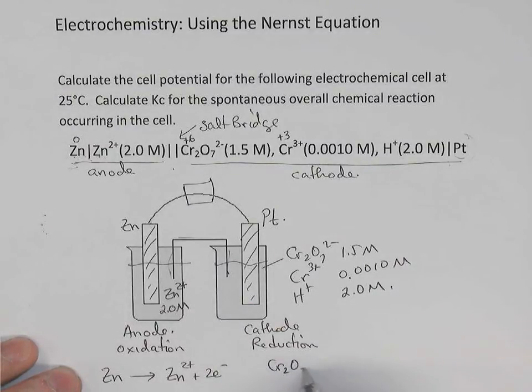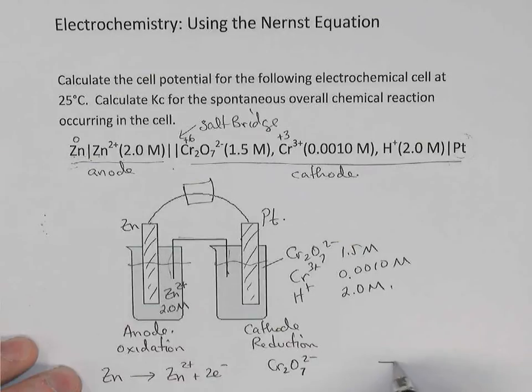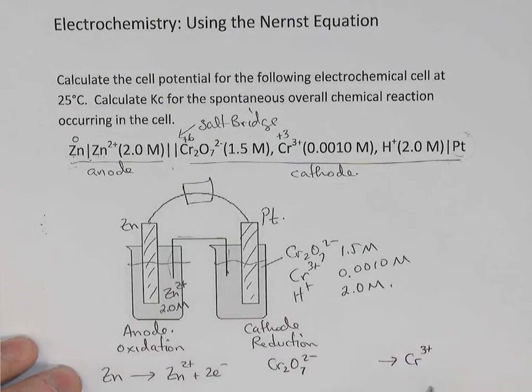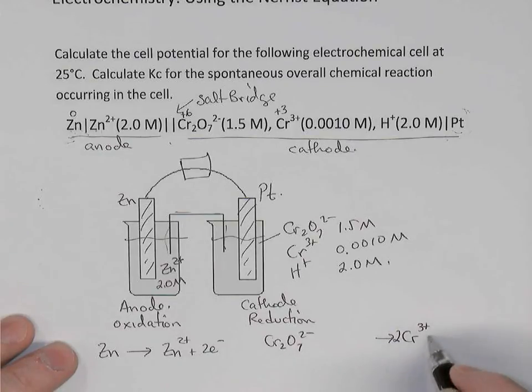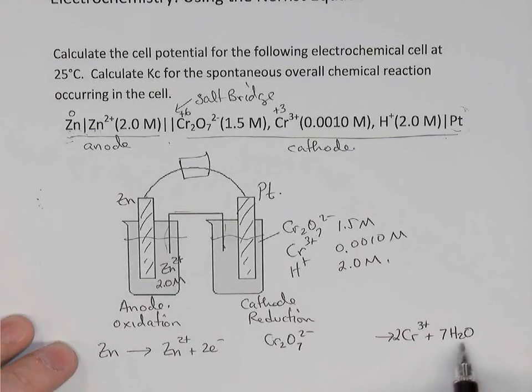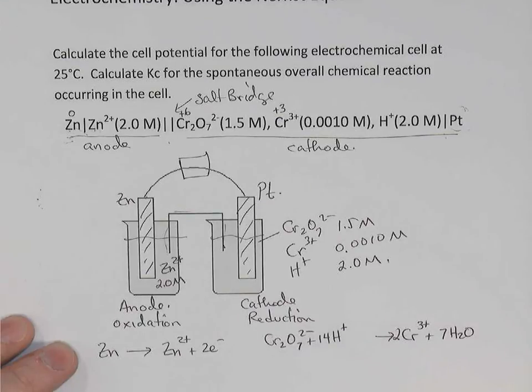So the dichromate becomes chromium 3+. Now if we balance this quickly, we see 2 chromiums on the left. So we're going to need 2 chromiums on the right. We have 7 O's on the left. So we'll put 7 waters on the right. And that gave me 14 hydrogens on the right. So I'll put 14 hydrogen ions on the left to balance it.